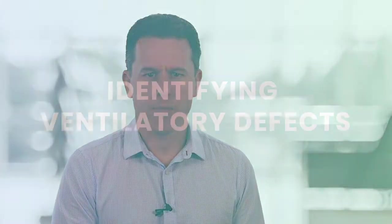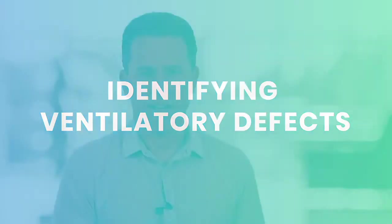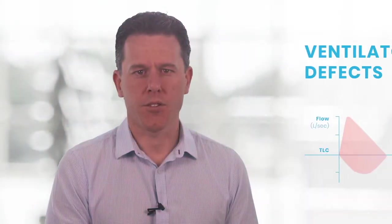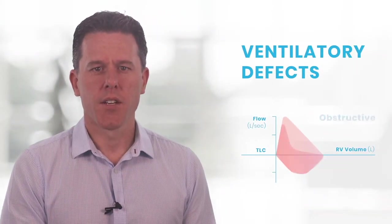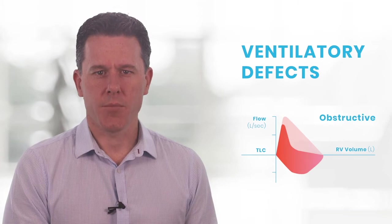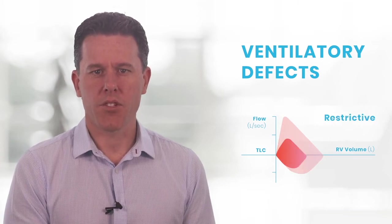When performing spirometry, there are two main defects that we can have, which are called ventilatory defects. One is obstructive and the other is restrictive.